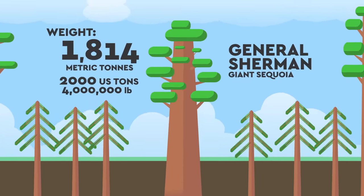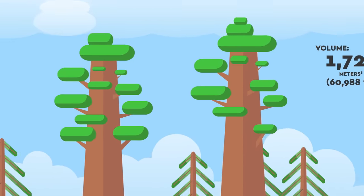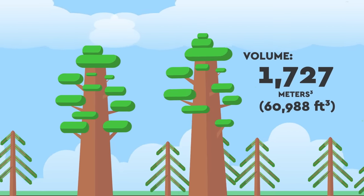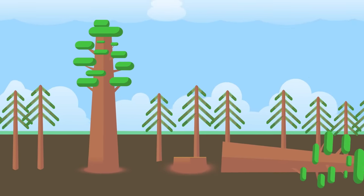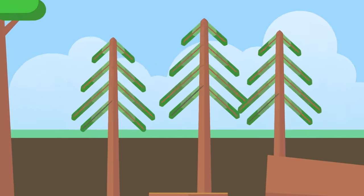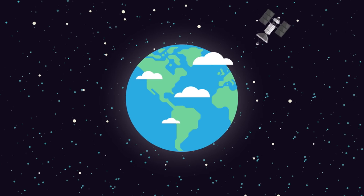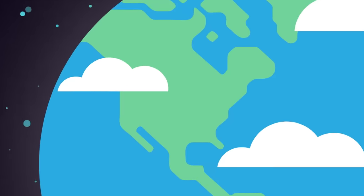And as astounding as those stats are, there was once a tree larger than the General, measuring at 1,727 cubic meters, but it was sadly cut down in the 1940s. However, even with these giants of the forest, we've still not found the largest living thing to have ever lived on our planet. To find what we're looking for, we need to travel to the Blue Mountains of Eastern Oregon.